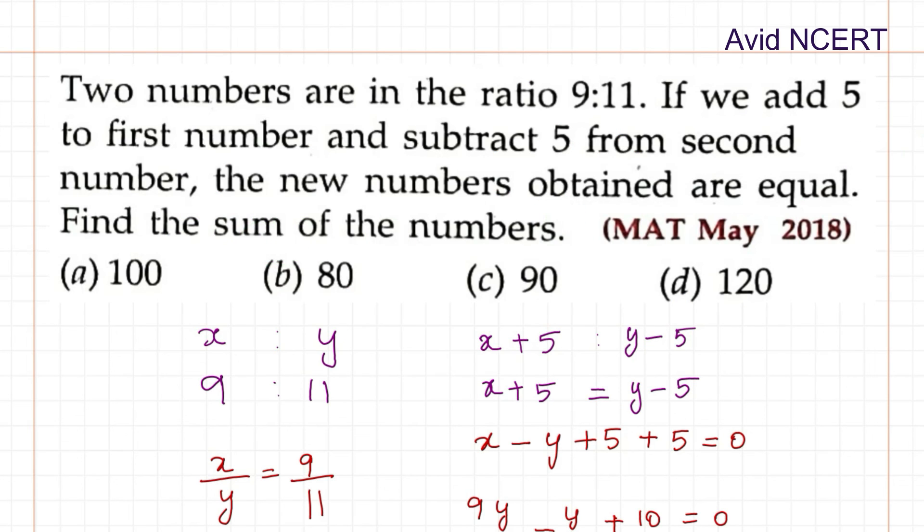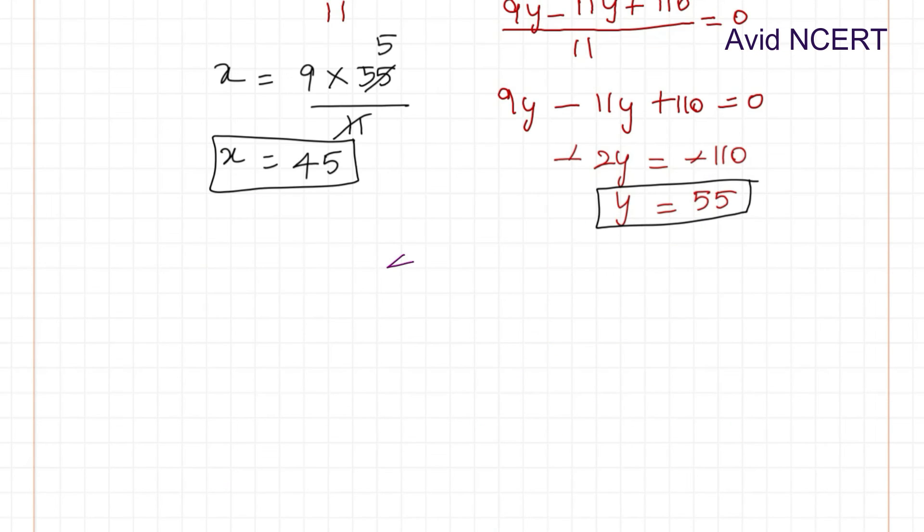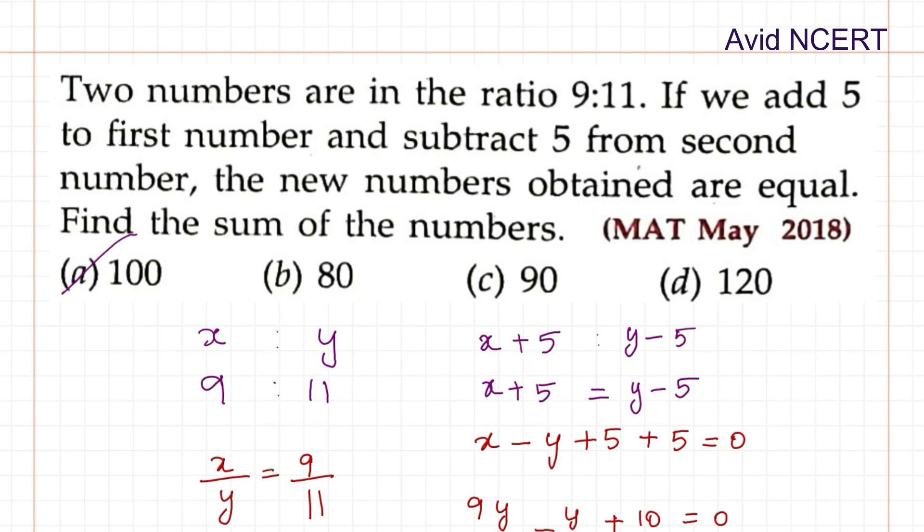Now we need to find the sum of these two numbers which is 45 plus 55 equals 100. Therefore the sum of two numbers is 100. Thanks for watching. If you have any doubts please let me know in the comments.